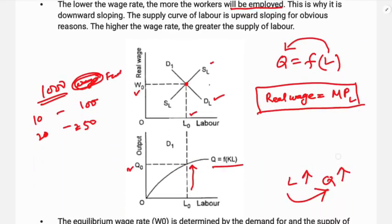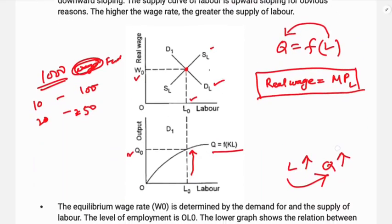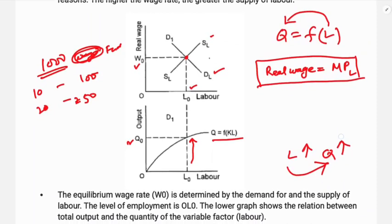So this is about the theory. The equilibrium wage rate is determined by the demand for and supply of labor. The equilibrium level of employment is OL0.